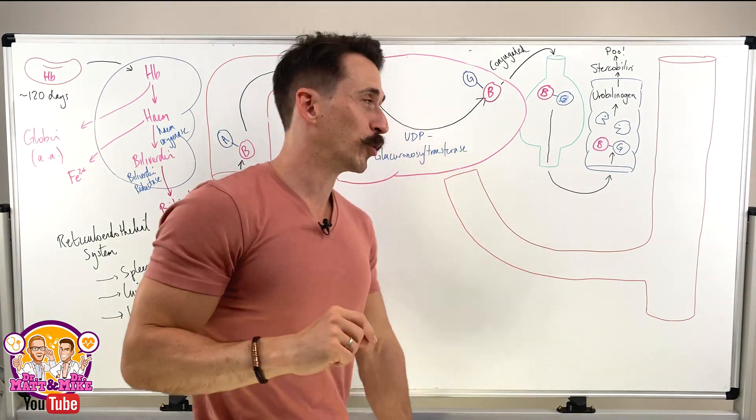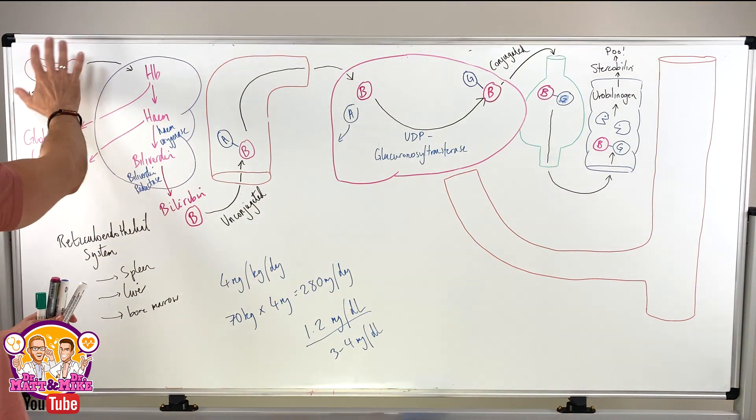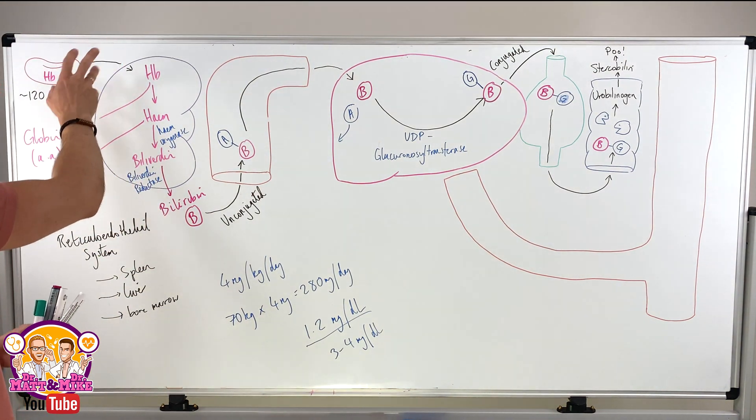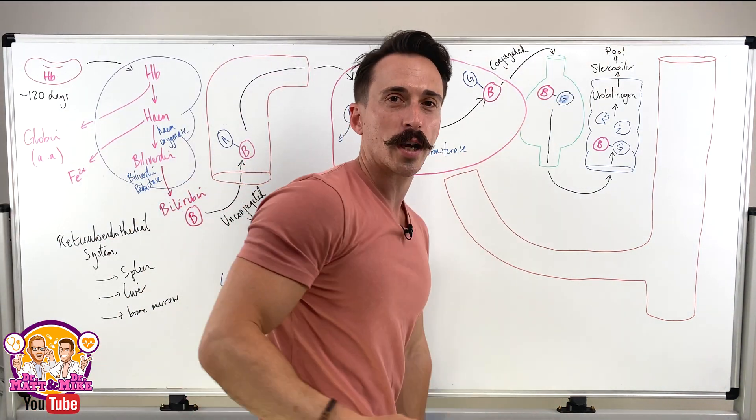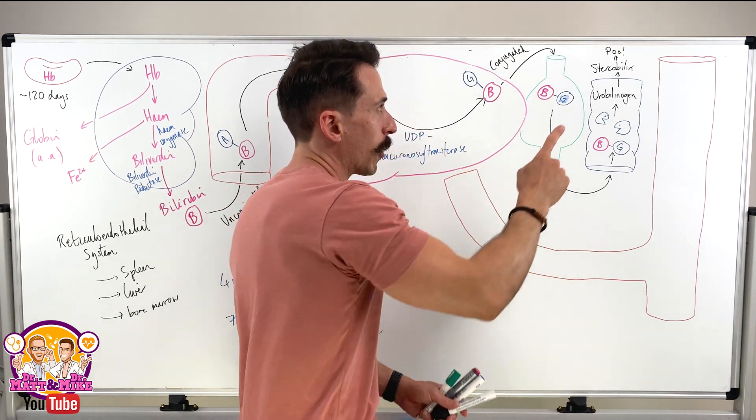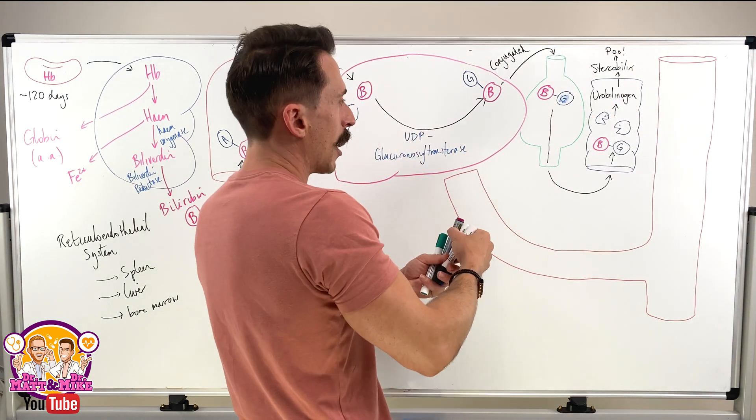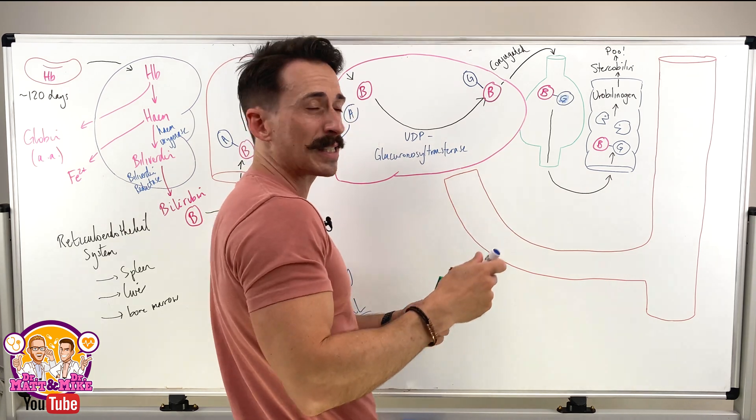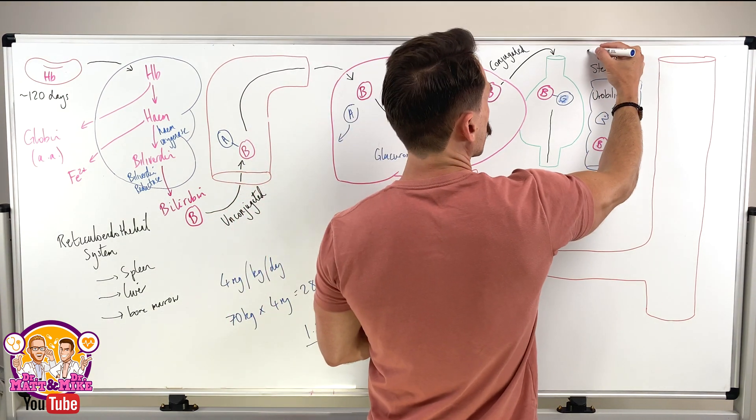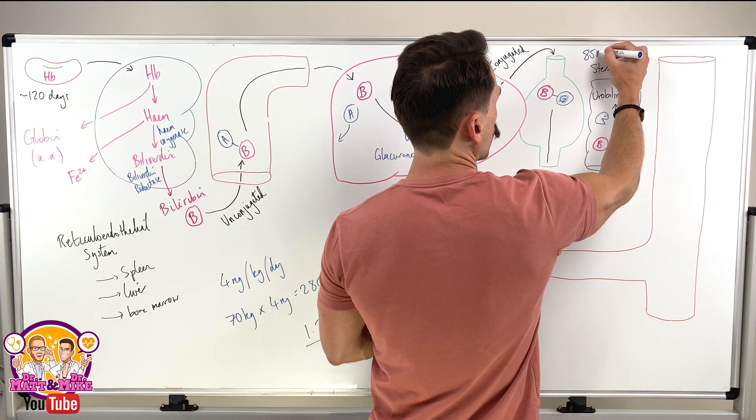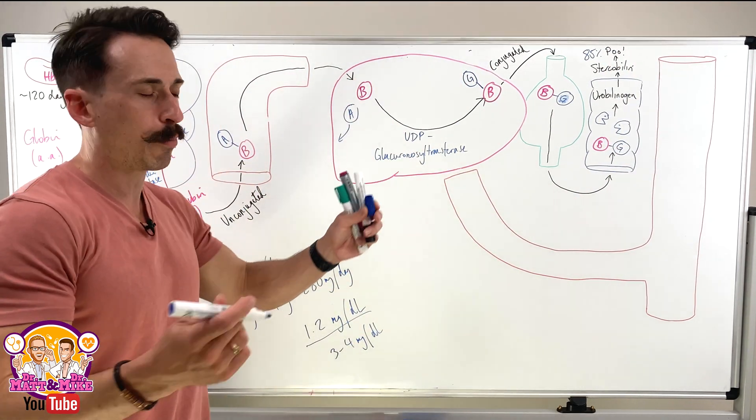This is an important point, as we'll get to when we start to focus on jaundice, because if there's a problem with your red blood cell production or breakdown, your poo may change color. Keep that in mind. Now, in actual fact, about 85% of your bilirubin gets pooed out. So that's where most of it goes. That's the end point for most.